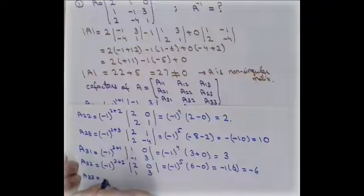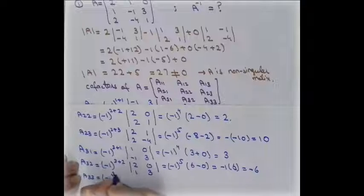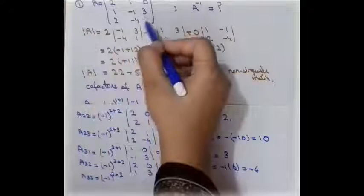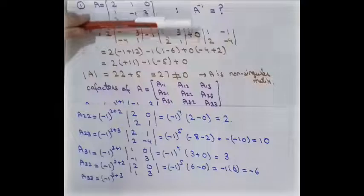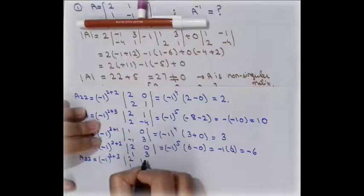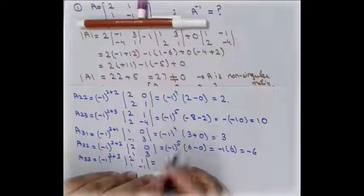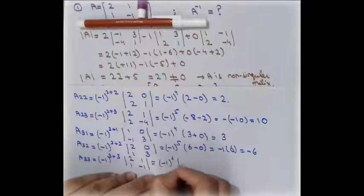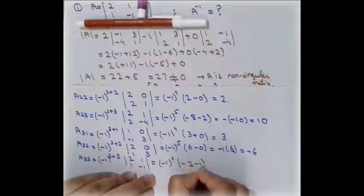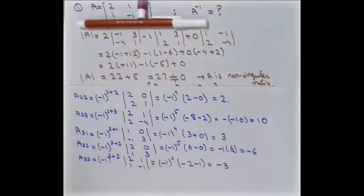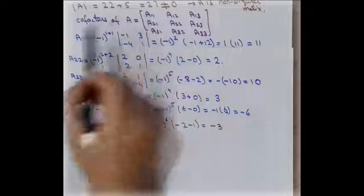For A33, with i+j = 3+3 = 6, we remove the corresponding row and column, leaving elements 2, 1, 1, -1. Computing: (-1)^6 × (-2 - 1) = 1 × (-3) = -3. So A33 = -3.